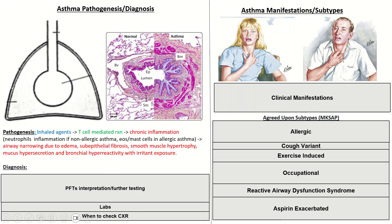Now moving to asthma pathogenesis and diagnosis. Inhaled irritants — perfume, organic substances, allergens, exercise, or even gastric fluid aspiration from GERD — cause a T-cell reaction. These T-cells cause inflammation of the bronchioles which, over time, leads to chronic remodeling of asthma. With re-exposure, patients can have IgE-mediated reactions and increased leukotriene secretion causing bronchoconstriction and exacerbations.